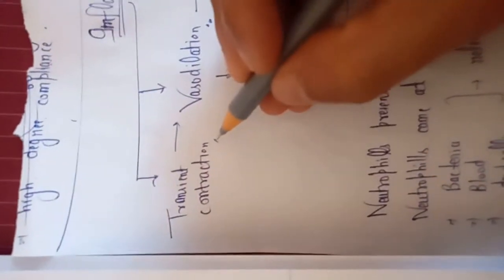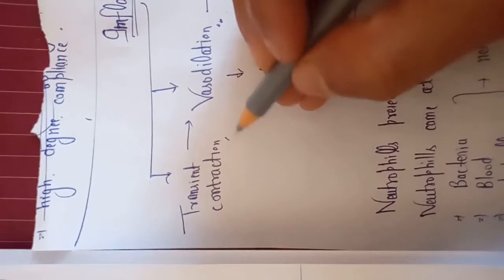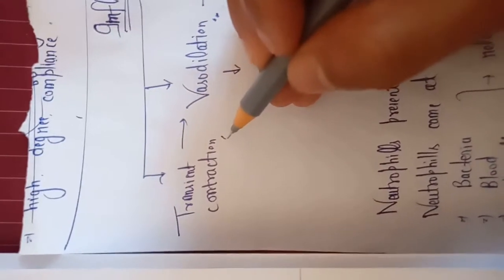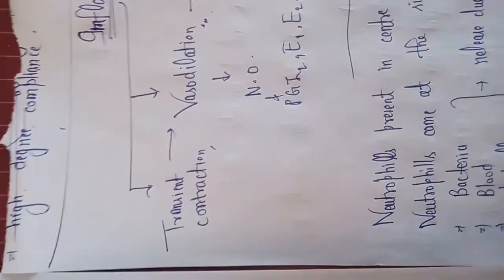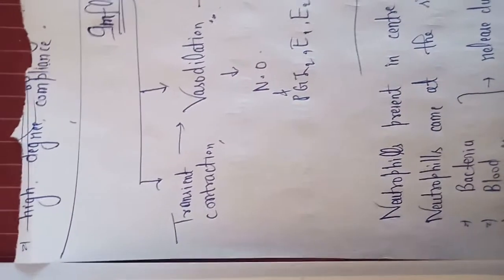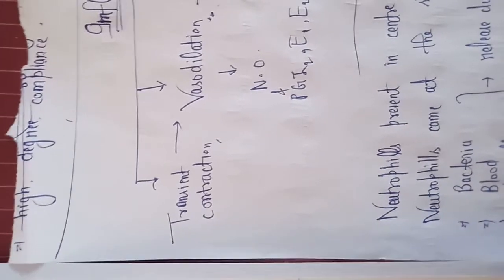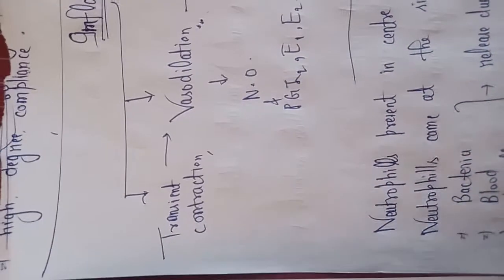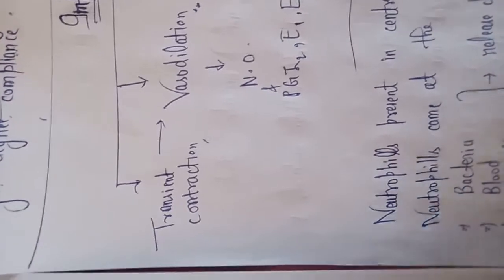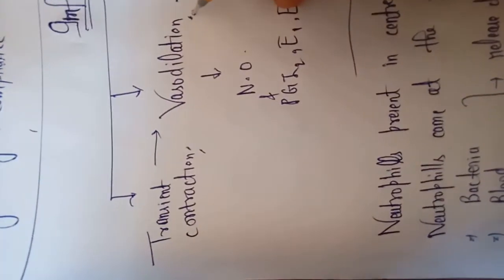Transient contraction is the body's initial response to cell and tissue damage, causing the blood vessel to shrink first. Then leukocytes and other chemicals responsible for inflammation are transferred to the site, blood flow increases, and vasodilation occurs. So the sequence is: transient contraction, then vasodilation.